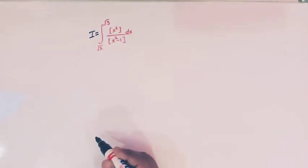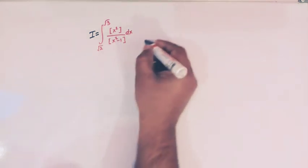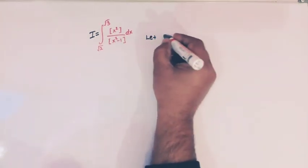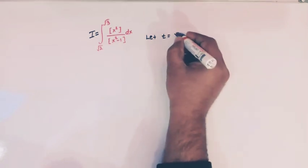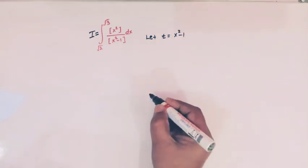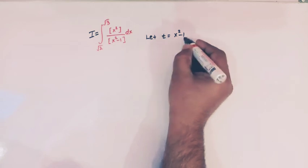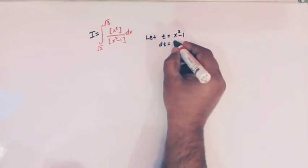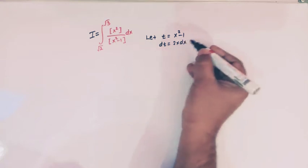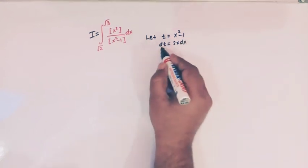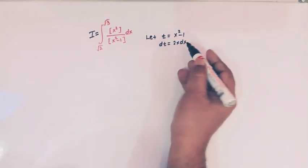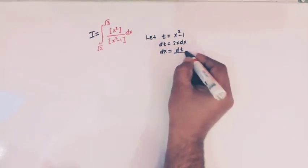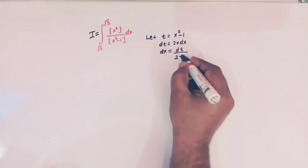We are going to make use of the method of substitution. Let us substitute t equal to x square minus 1, so dt is equal to 2x dx.